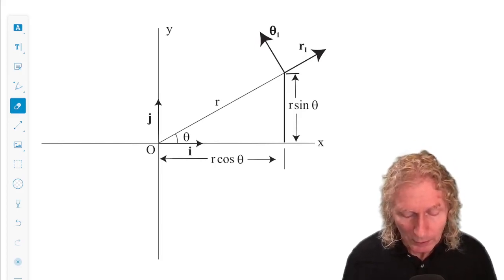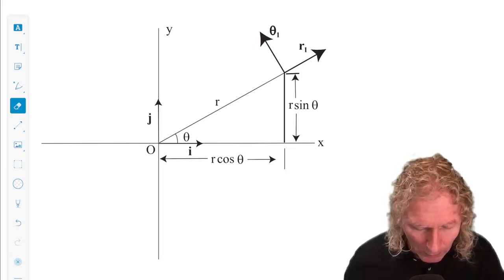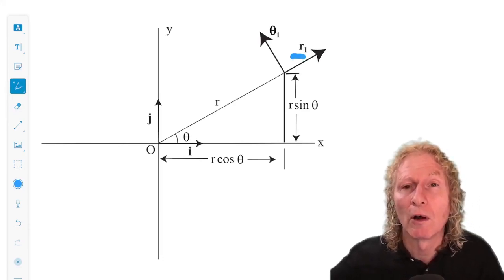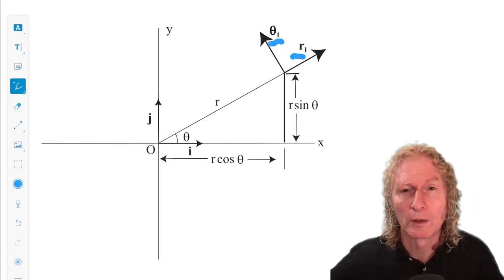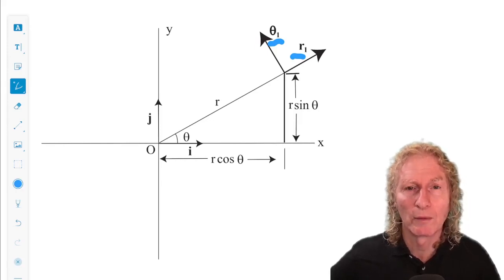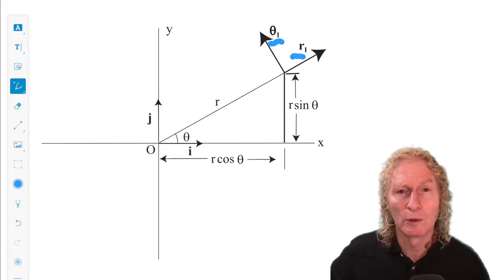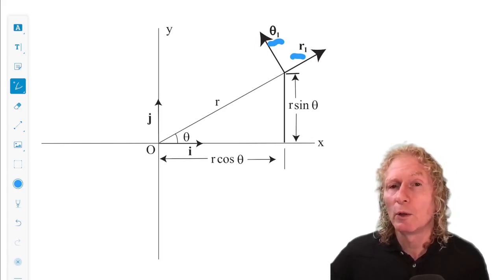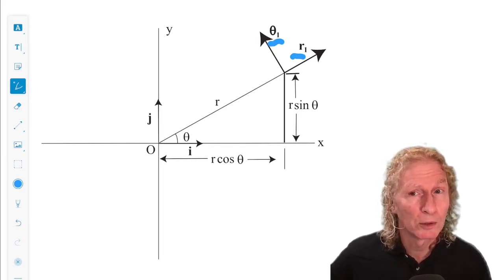Now we're going to construct two unit vectors: r1, which is a unit vector in the direction of increasing r, and theta1, which is a unit vector in the direction of increasing theta. So if r were to rotate around in theta, theta would increase in the usual sense, and that would be the direction of theta1 and r1. These will be unit vectors, so for all time their length is one, but their direction will change.